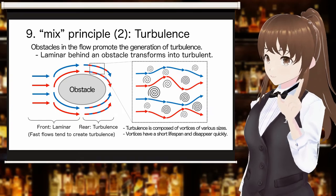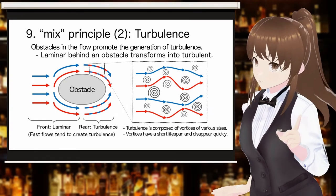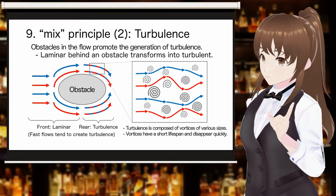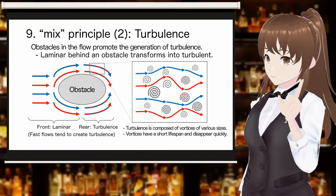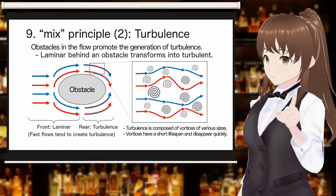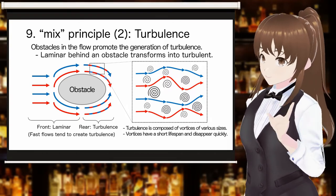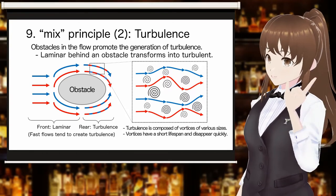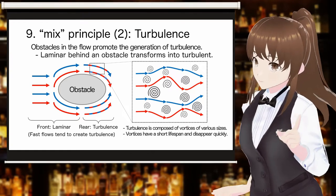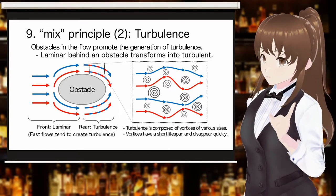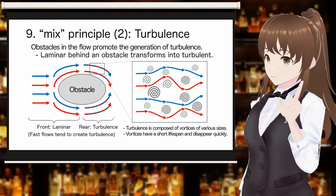However, the lifespan of these vortices is short and they disappear quickly. In the previous experiment, there was no difference in the rate of mixing between natural and forced convection. This is due to the disappearance of the turbulent vortex.